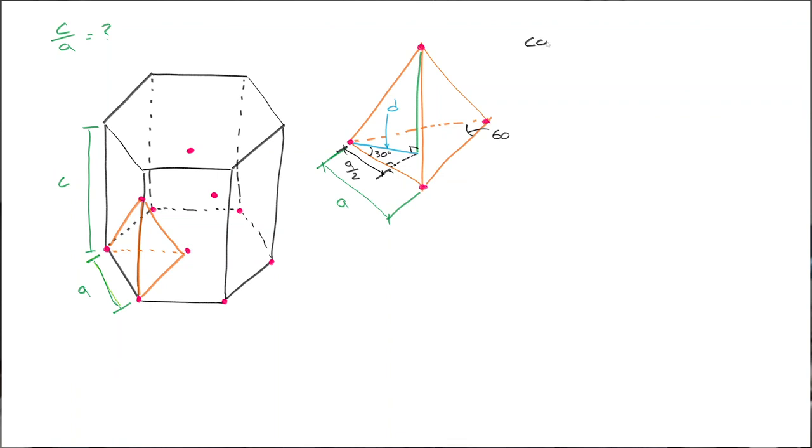We could say cos of 30 degrees is going to be A by 2 over D. From that we could say if we massage this equation we could solve for D. D would of course just be A upon 2 cos 30. So that's great, we've got D.